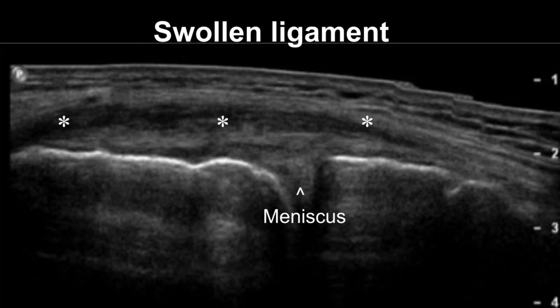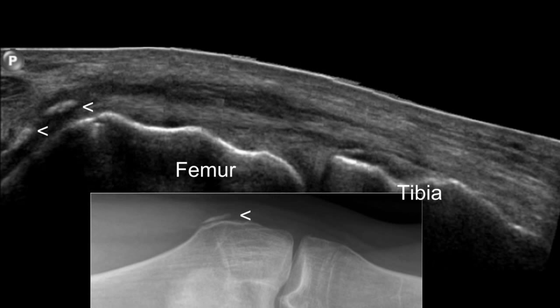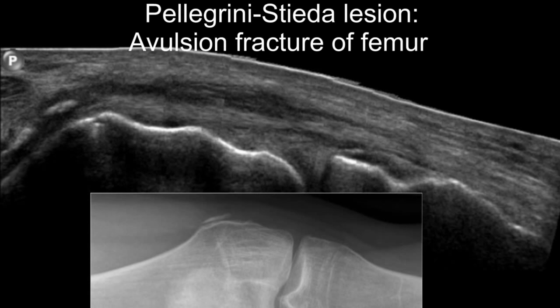The most common signs of an injured MCL are thickening and swelling of the ligament with heterogeneously hypoechoic change. In cases of severe injury, echogenic foci superficial to the bony cortex of the femur may be noted in the proximal part of the MCL. This particular type of injury is known as a Pellegrini-Stieda lesion.